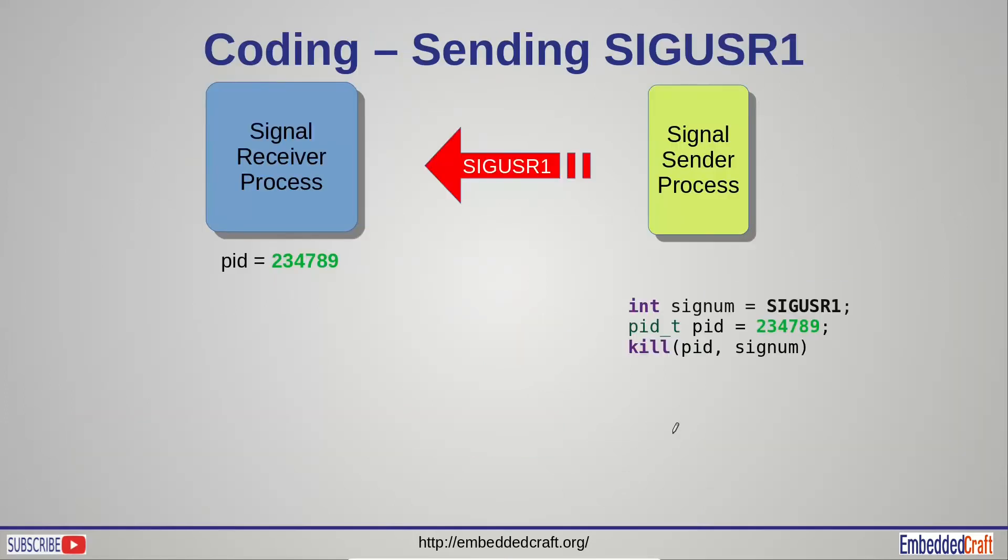Let us review source code. We have signal sender process. It is using kill API to send signal. We have to pass process ID and give signal number to kill API.